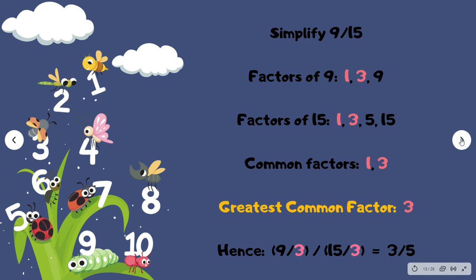Let's simplify 9 over 15. Factors of 9 are 1, 3, and 9, and factors of 15 are 1, 3, 5, and 15. The common factors are 1 and 3. The greatest common factor is 3. So we divide 9 by 3 and 15 by 3 to give you 3 fifths.